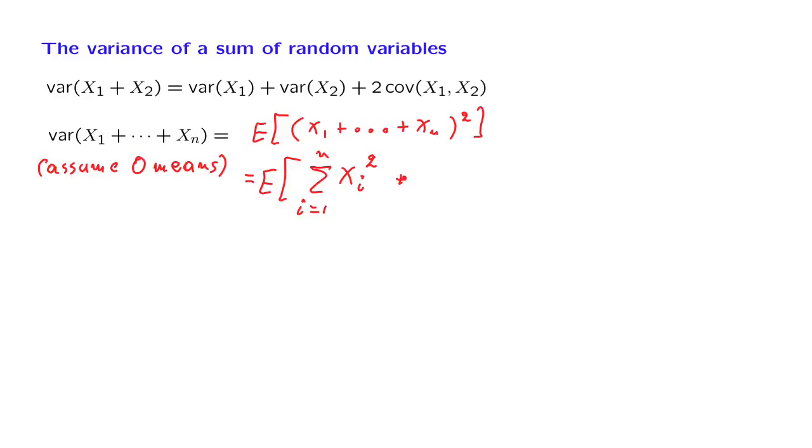And then we will have a bunch of cross terms of the form xi, xj. And we obtain one cross term for each choice of i from 1 to n, and for each choice of j from 1 to n.